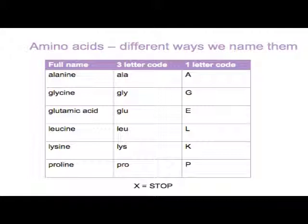I just wanted to digress a little and explain some of the nomenclature we use, which might be perplexing. As technology has progressed, we've learned more and more about the order of amino acids in our proteins, and we now have the sequence of the human genome and of many different genomes. To cope with this information, we use a shorthand notation to record the information in a protein.